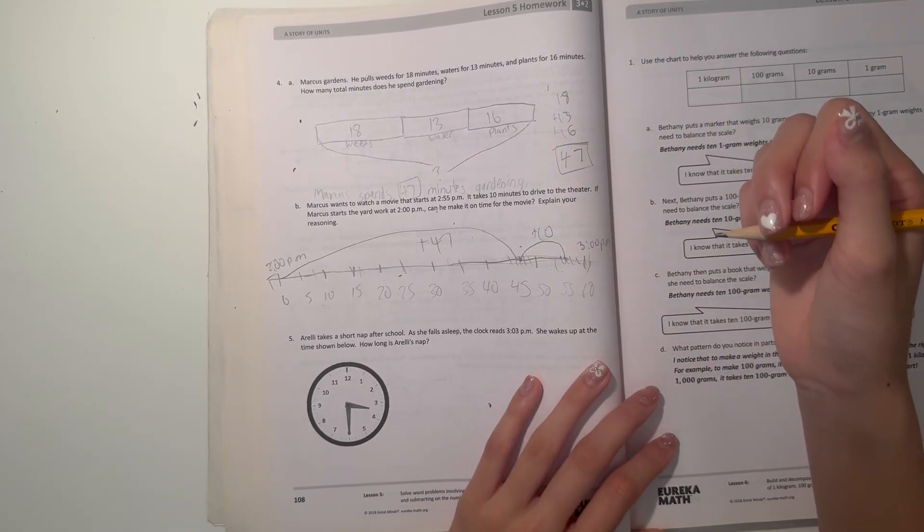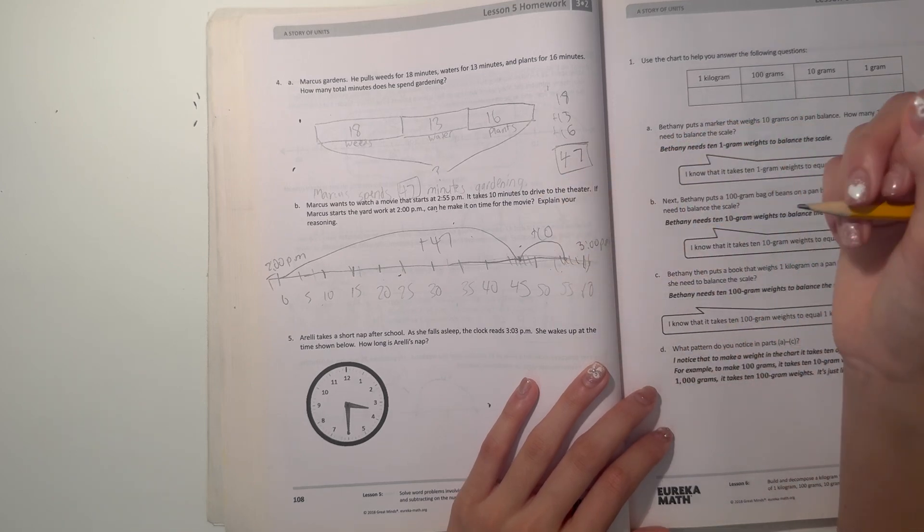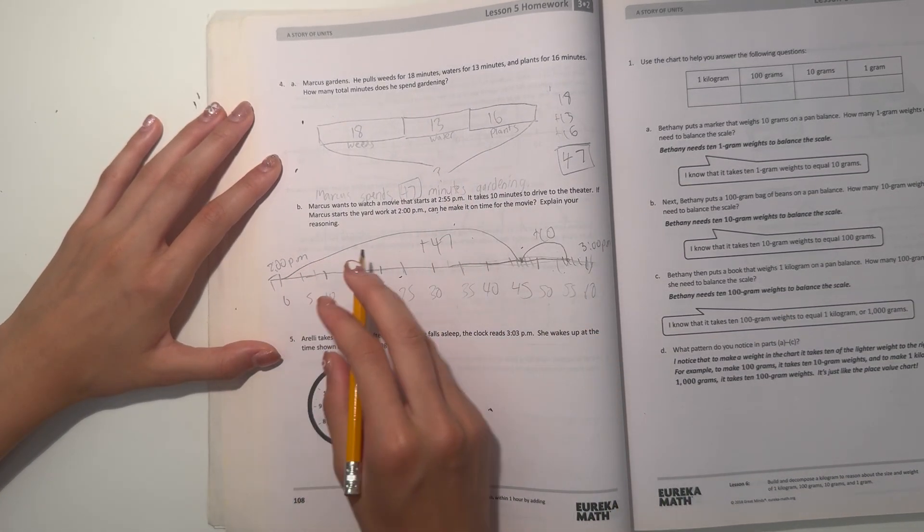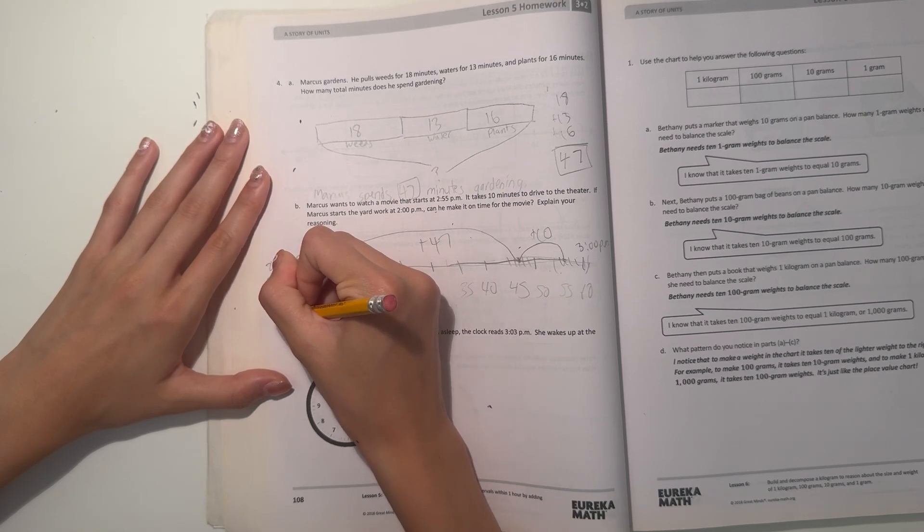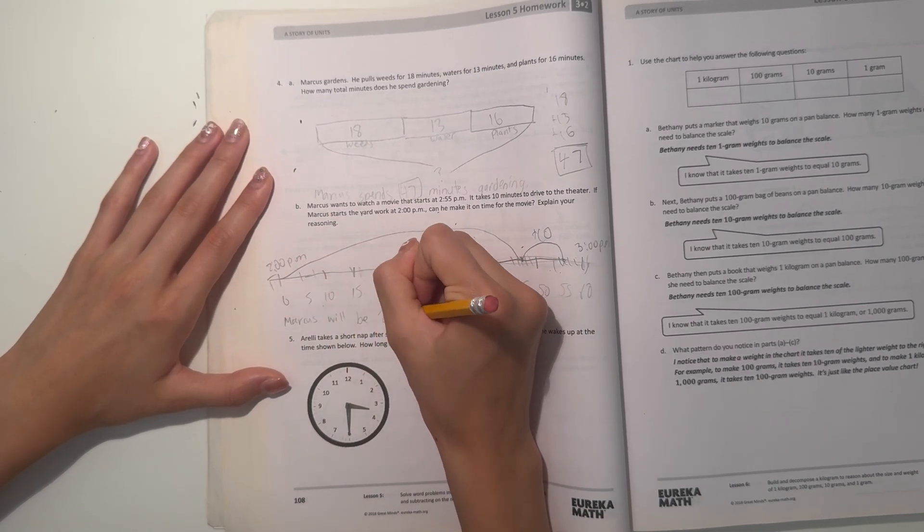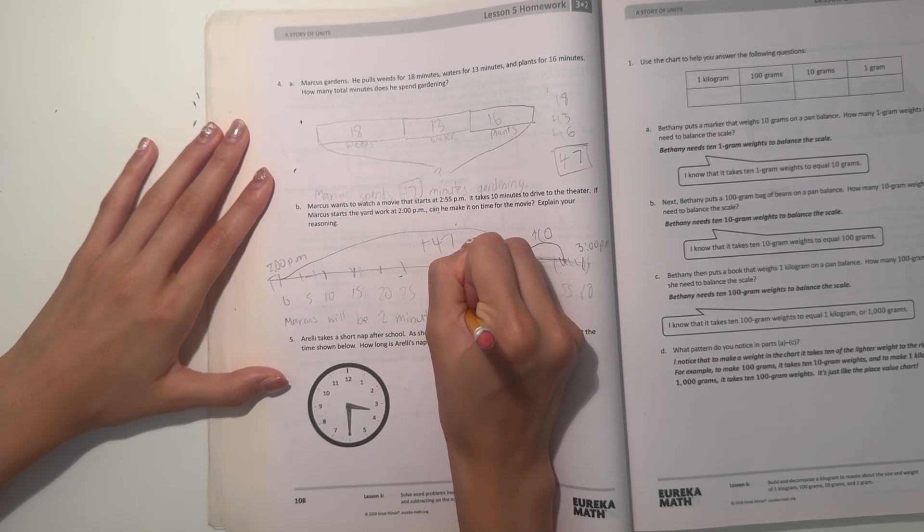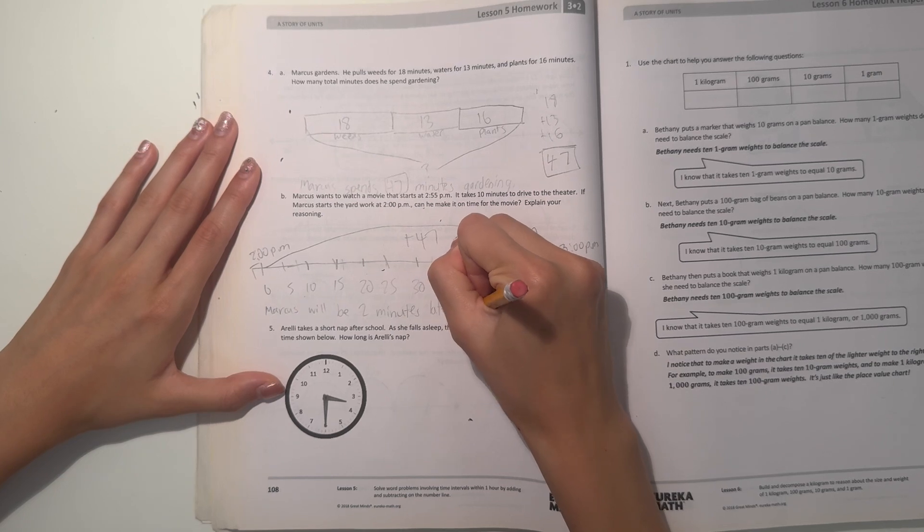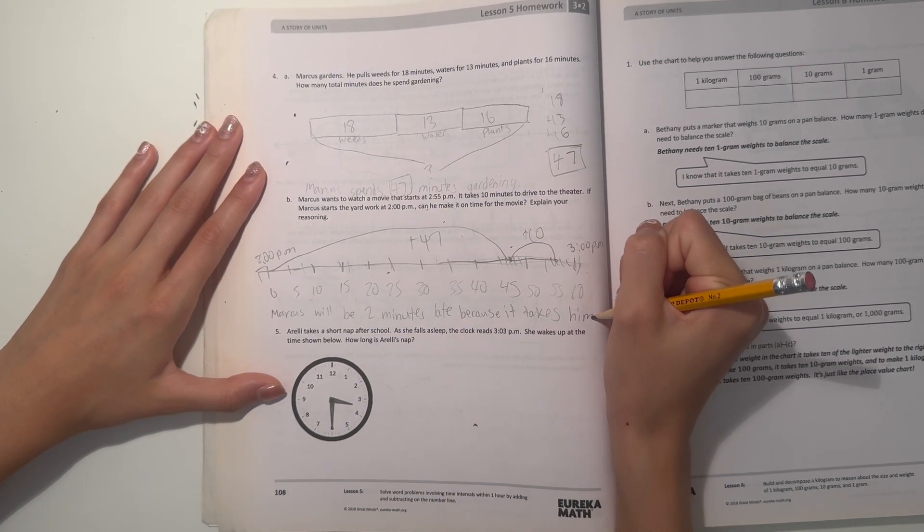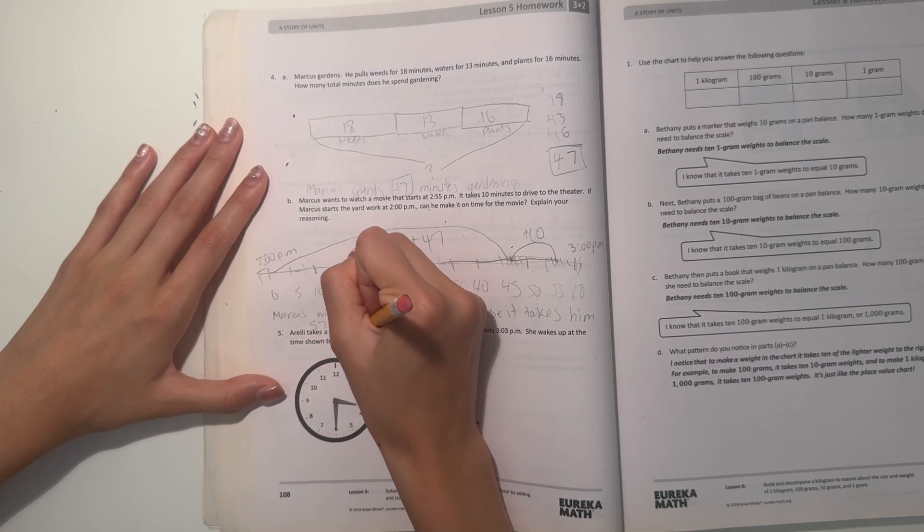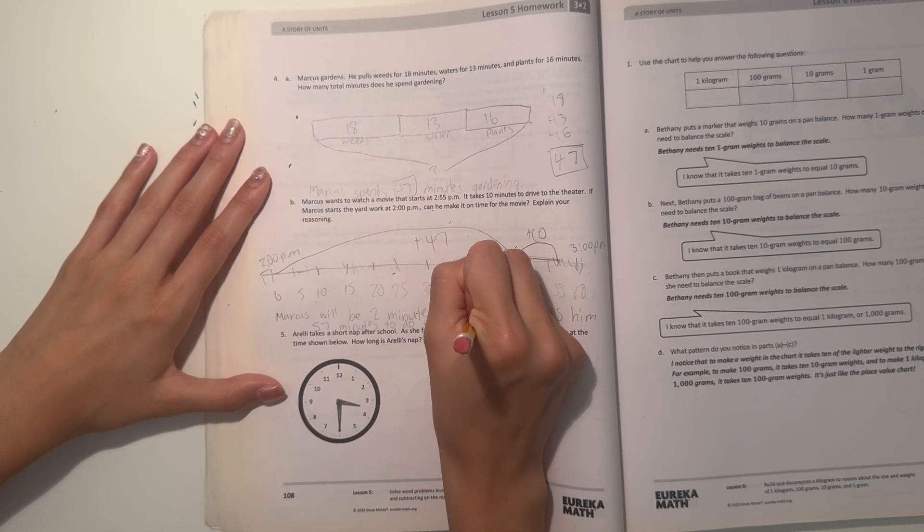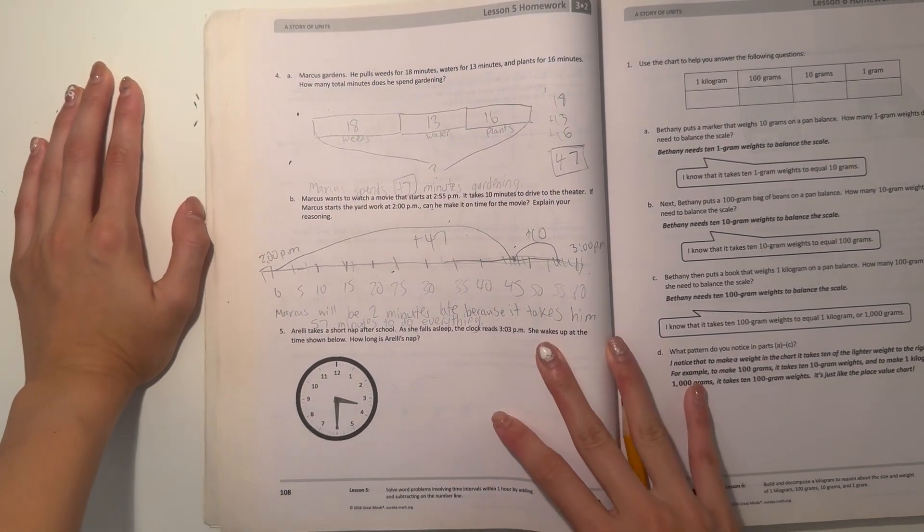So 57, and since he wants to make the movie at 2:55 and it's already 2:57, he'll not make the movie. So I explained it reasonably. Marcus will be two minutes late because it takes him 47 minutes to do the yard work and 10 more minutes to drive there, so he will not make the movie on time.